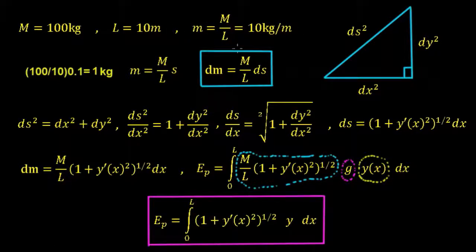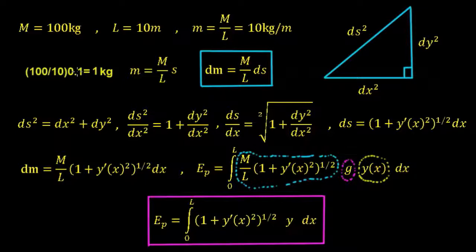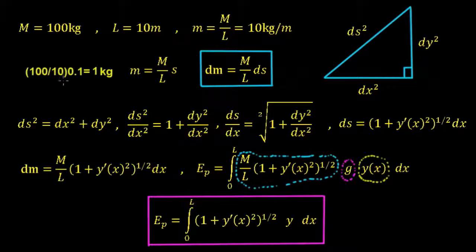So small m is the mass per unit length. For example, if we want the mass of a 0.1 meter length of rope, we take 0.1 meters and multiply by the mass per unit length. That gives us M over L times the length: 100 divided by 10, times 0.1, which equals 1 kilogram. So a 0.1 meter length of rope would weigh 1 kilogram.